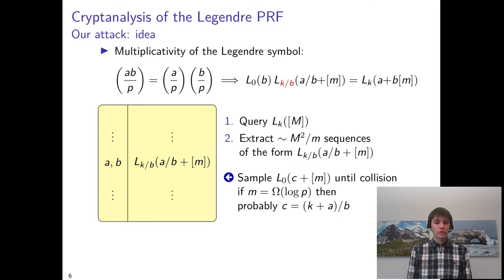If the sequences are long enough, then any such collision with high probability gives us an equality of the arguments. So this means that then c must be equal to k plus a over b, and this allows us to recover the key k.